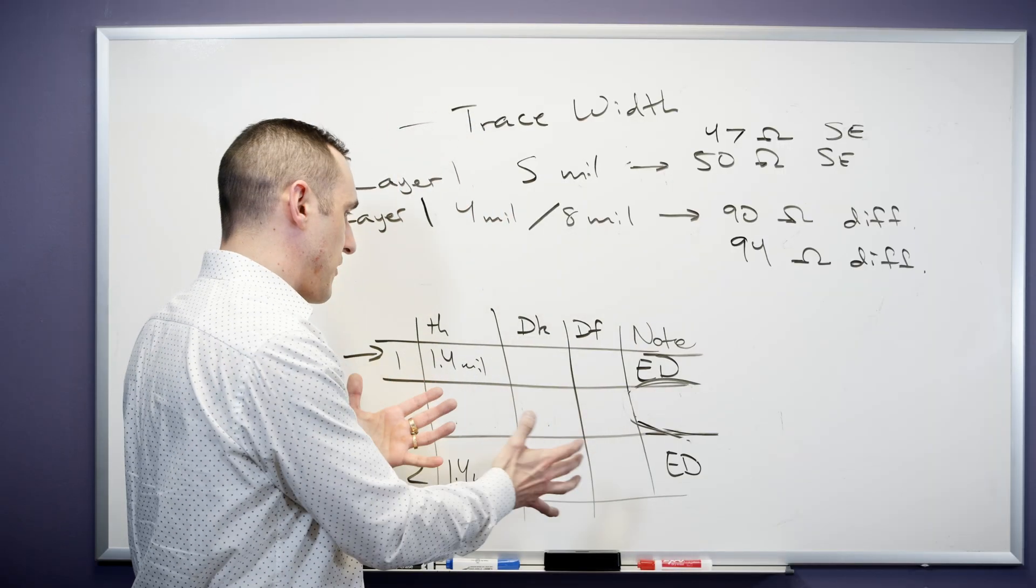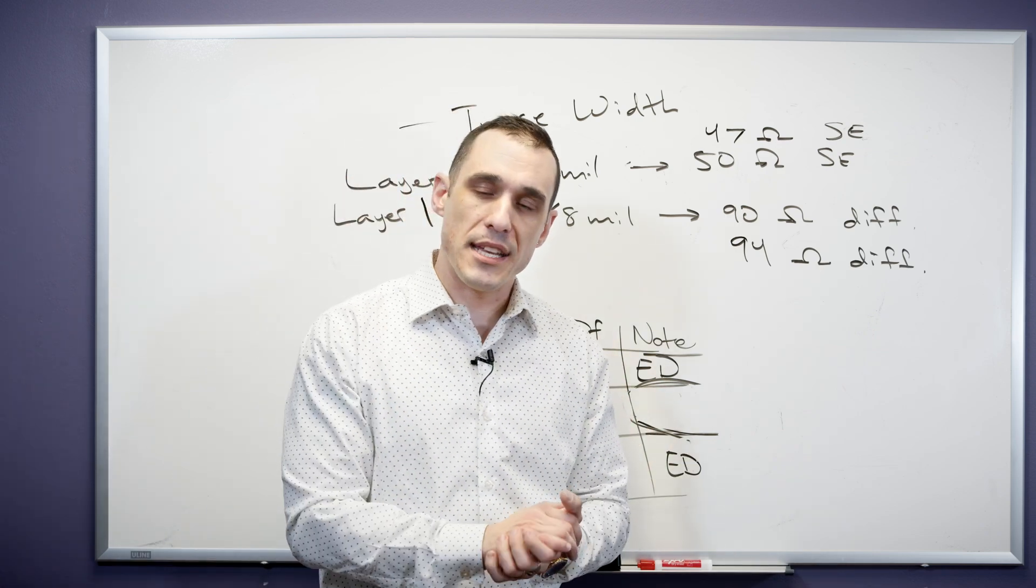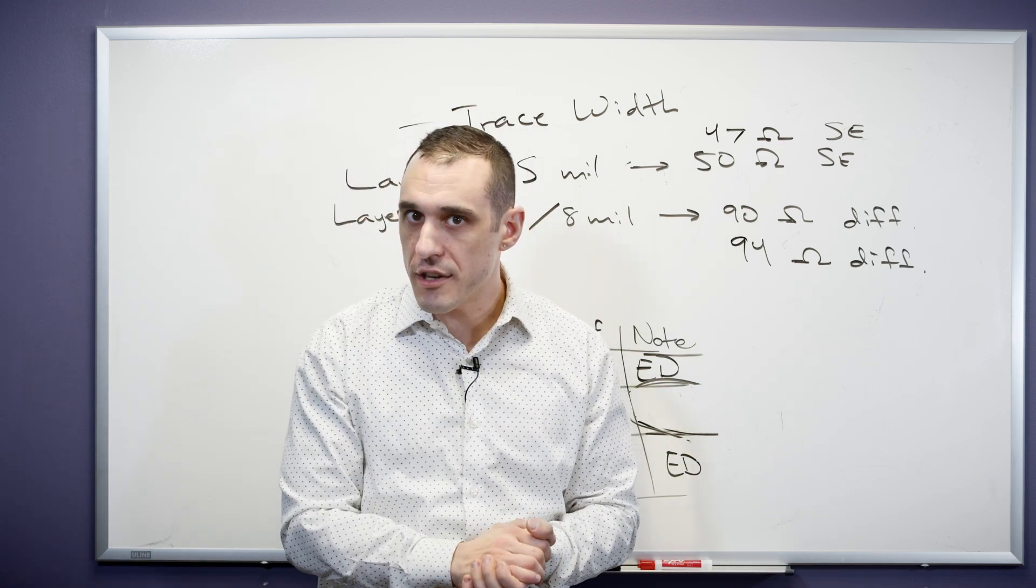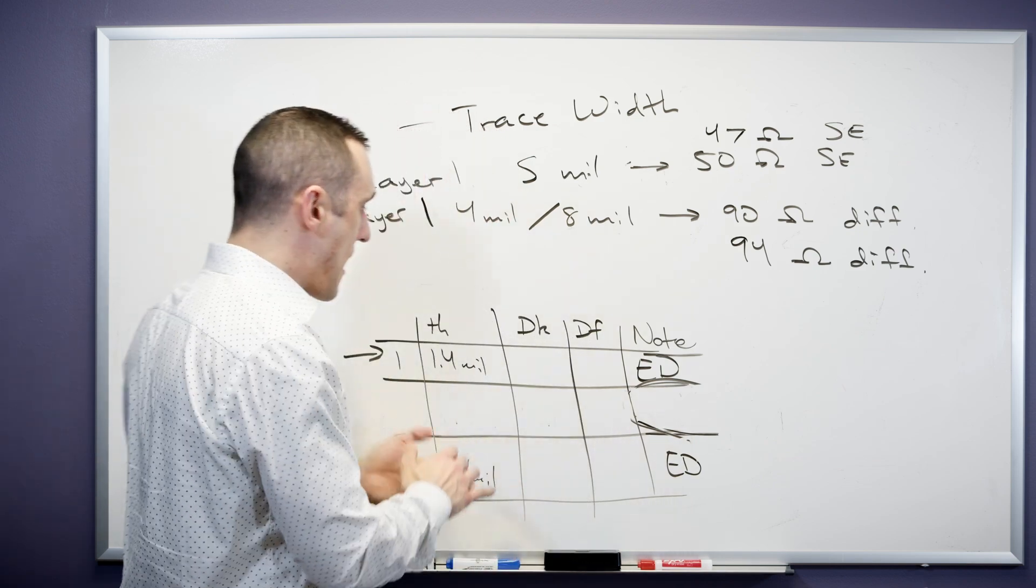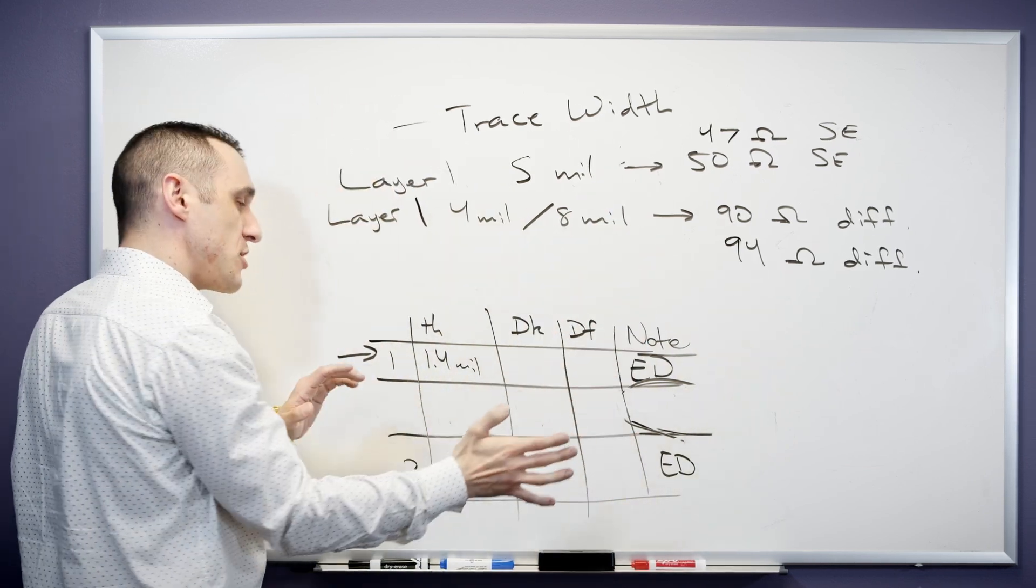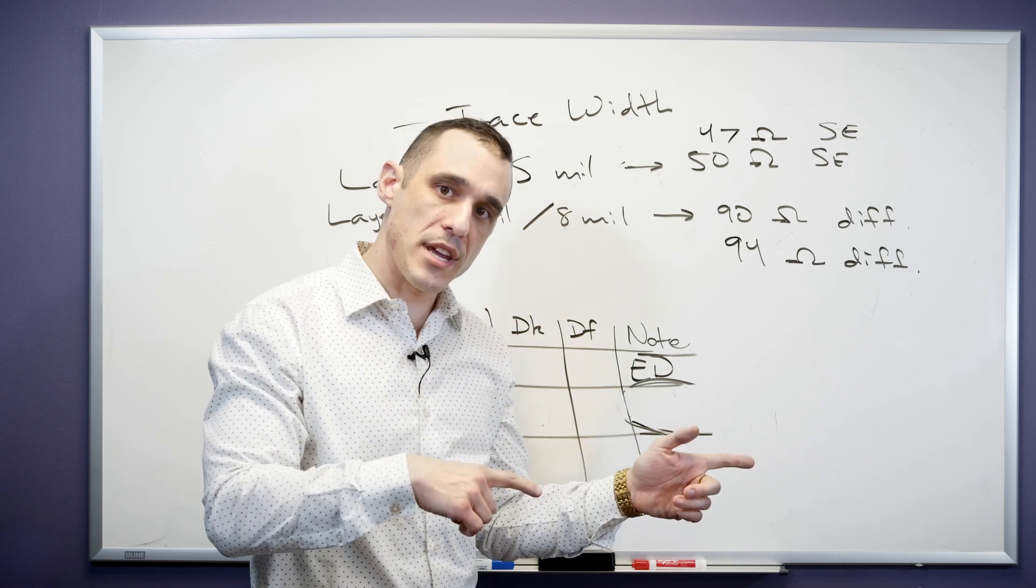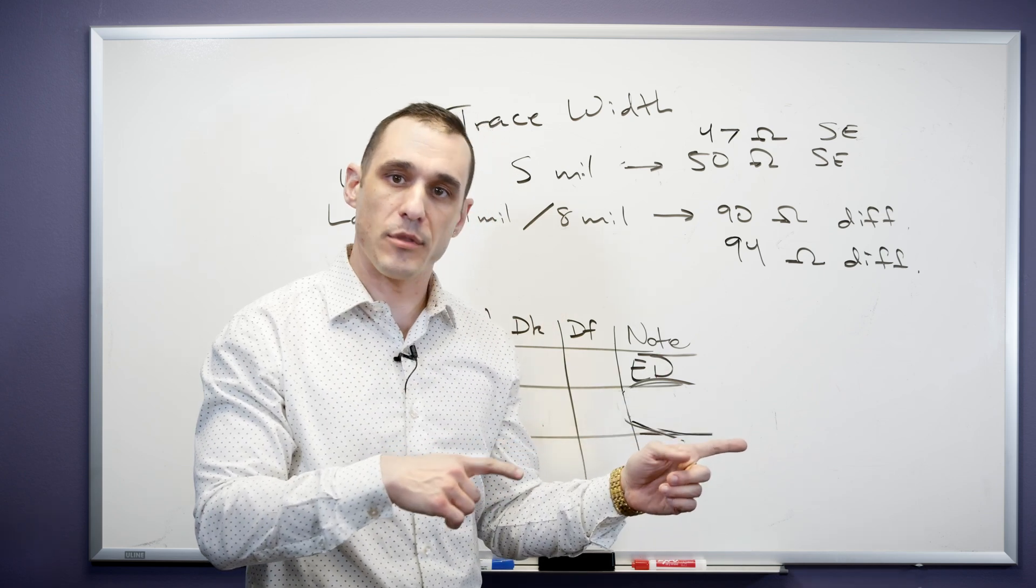So what's the easiest way to specify all of this for a manufacturer? Well, one easy way to do it is to use your fabrication drawing or you can send them a stack-up table with the specific impedance profiles written into it. So both approaches are acceptable. Let's take a look on screen and see what one of those stack-up tables might look like.